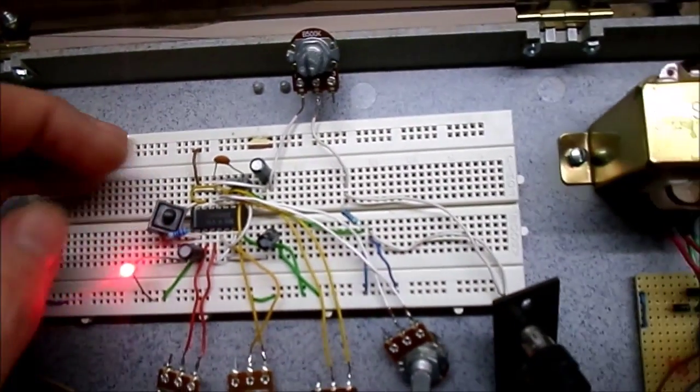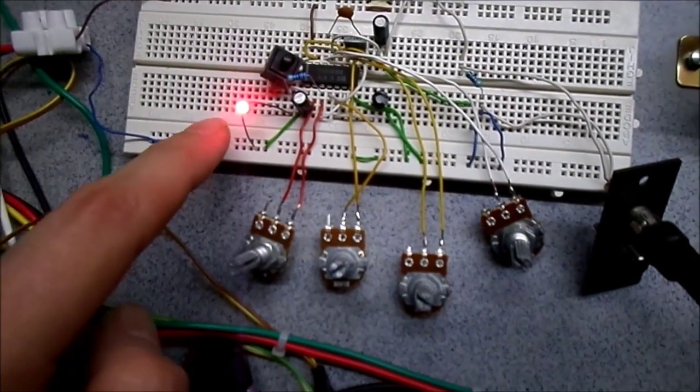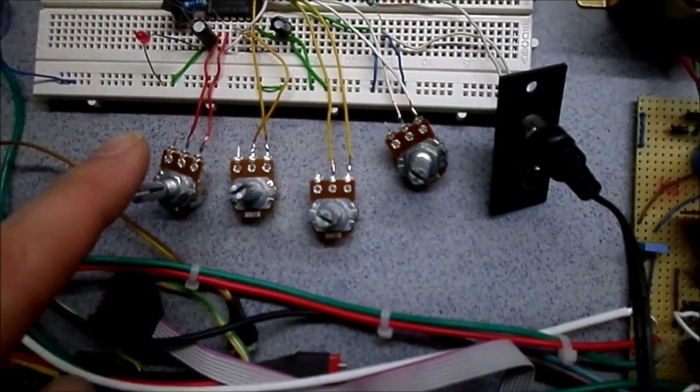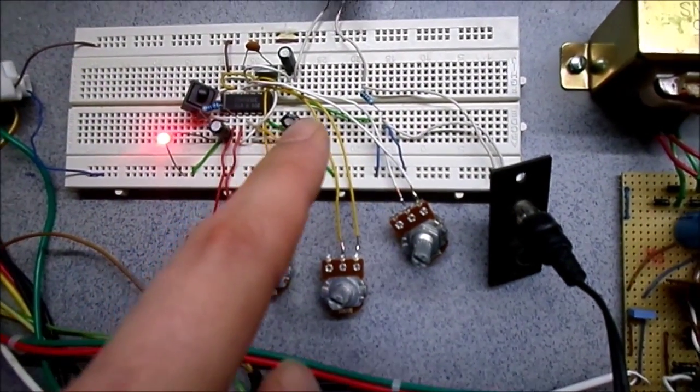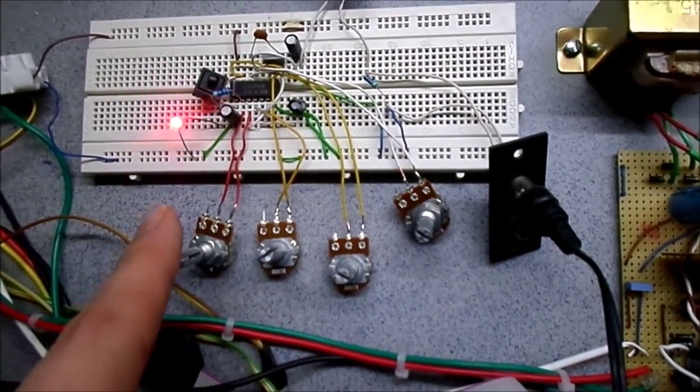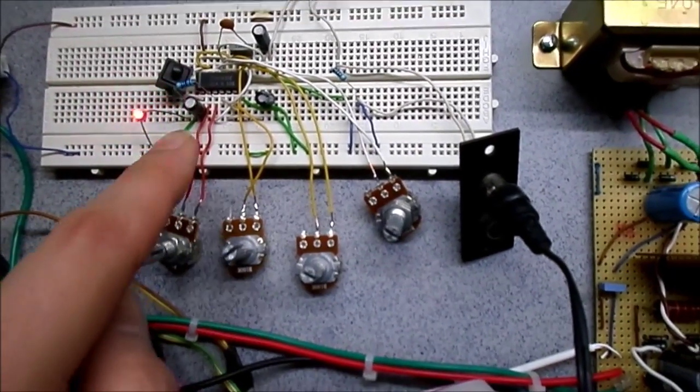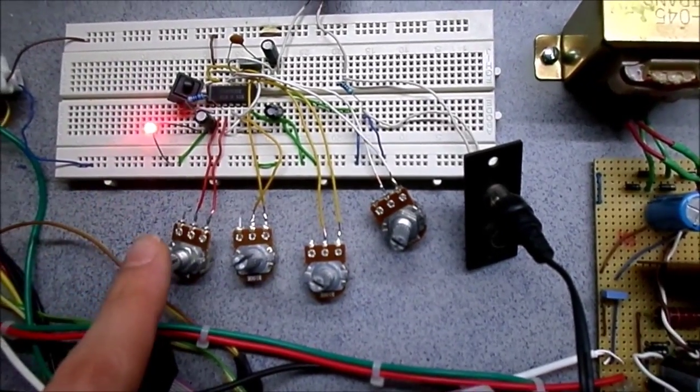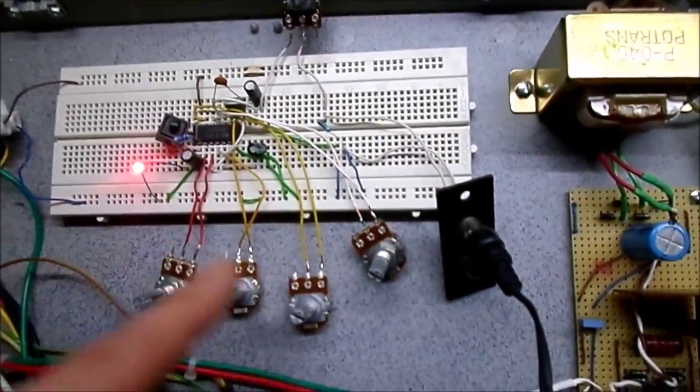As you can see it's constantly oscillating, and basically each gate stage or each Schmitt trigger is its own independent oscillator with a capacitor and a potentiometer here, and they all feed into one another.